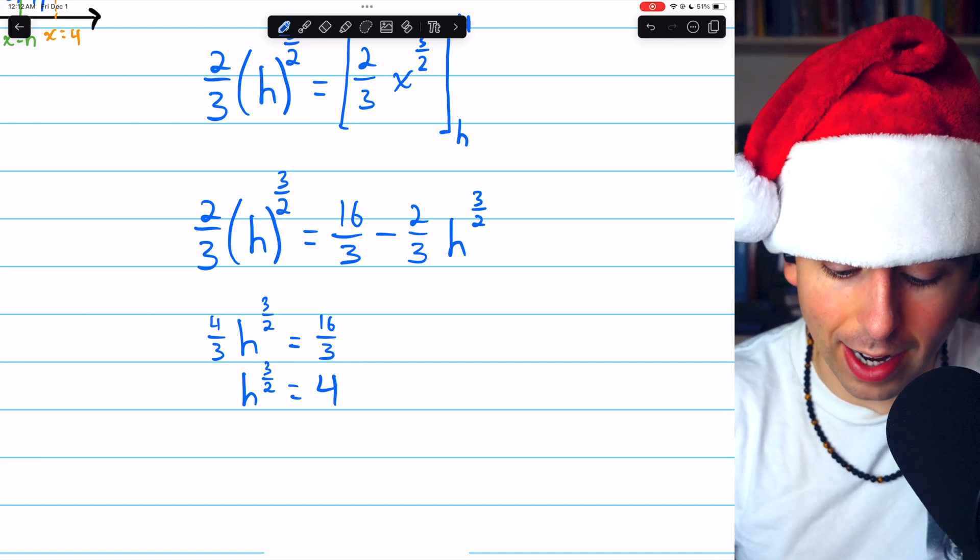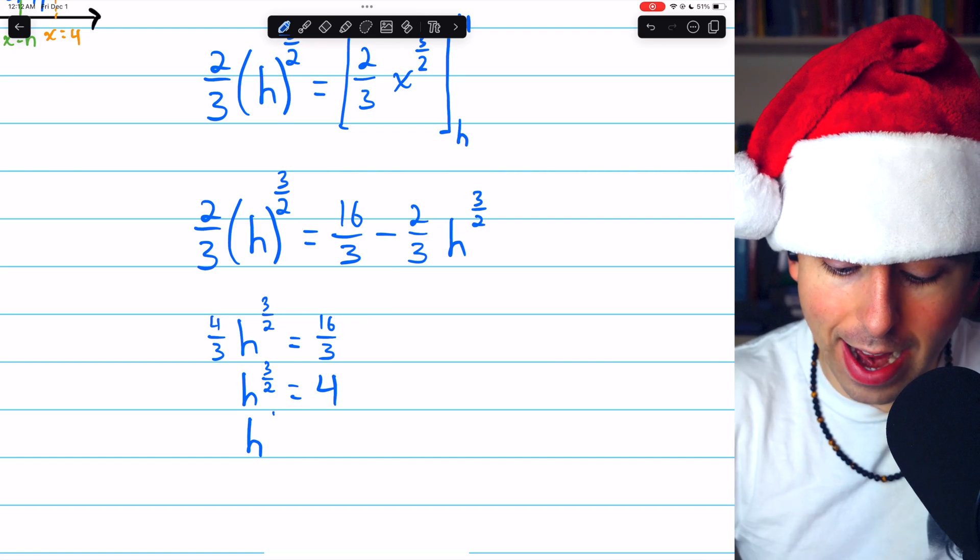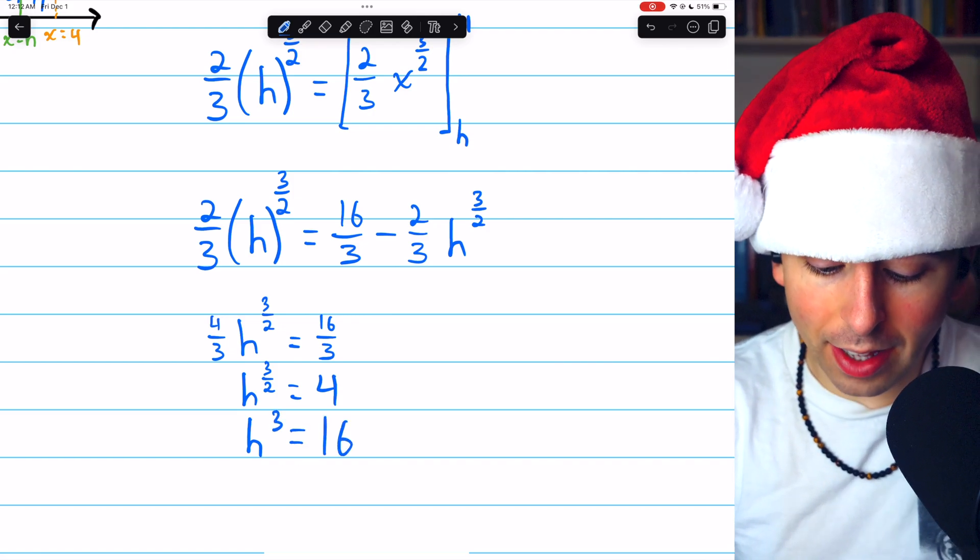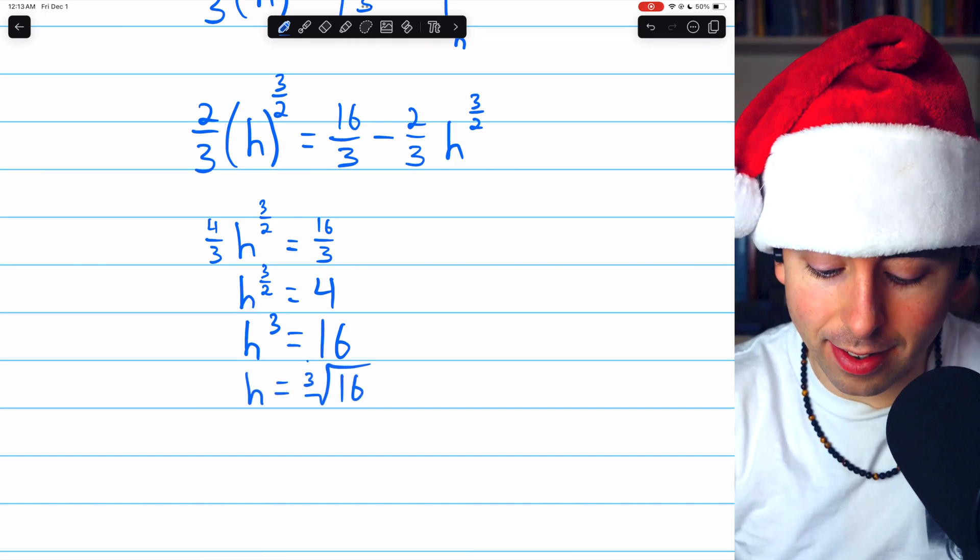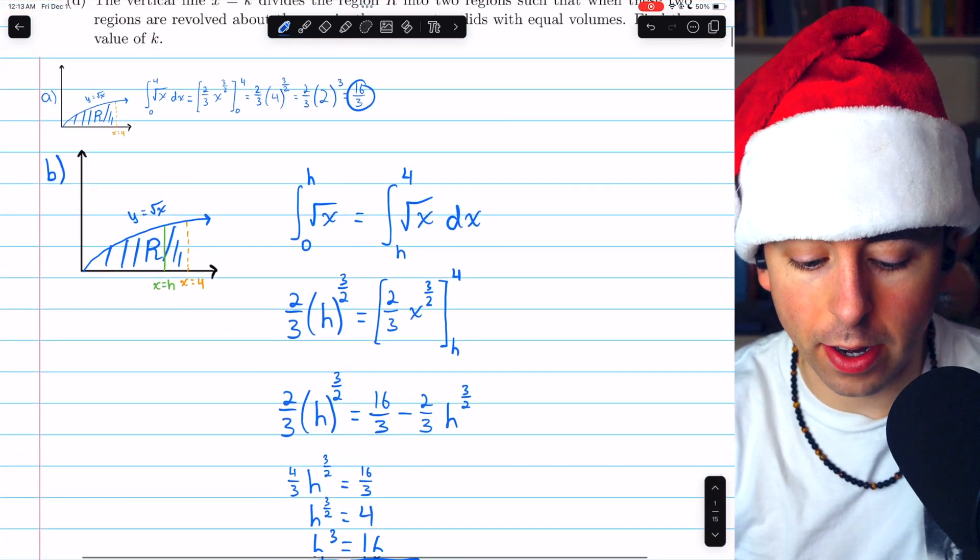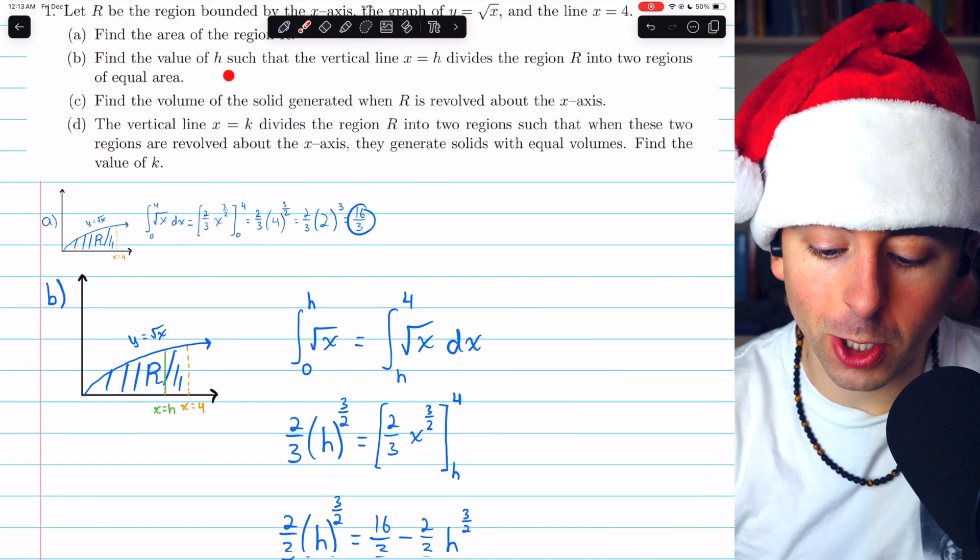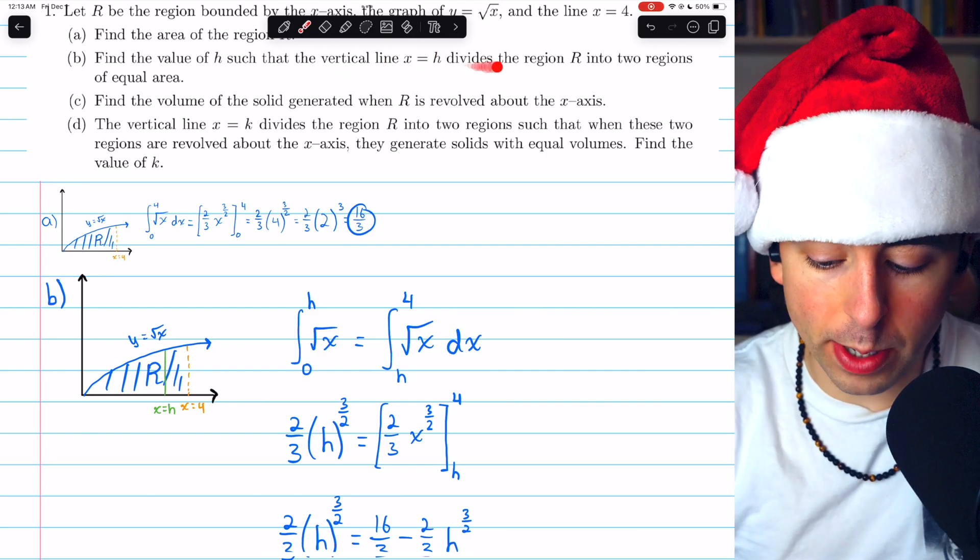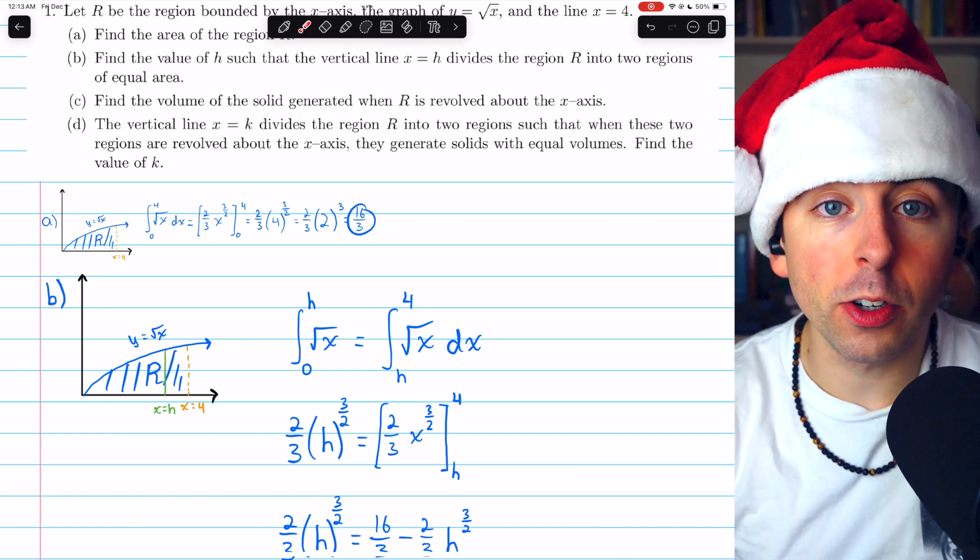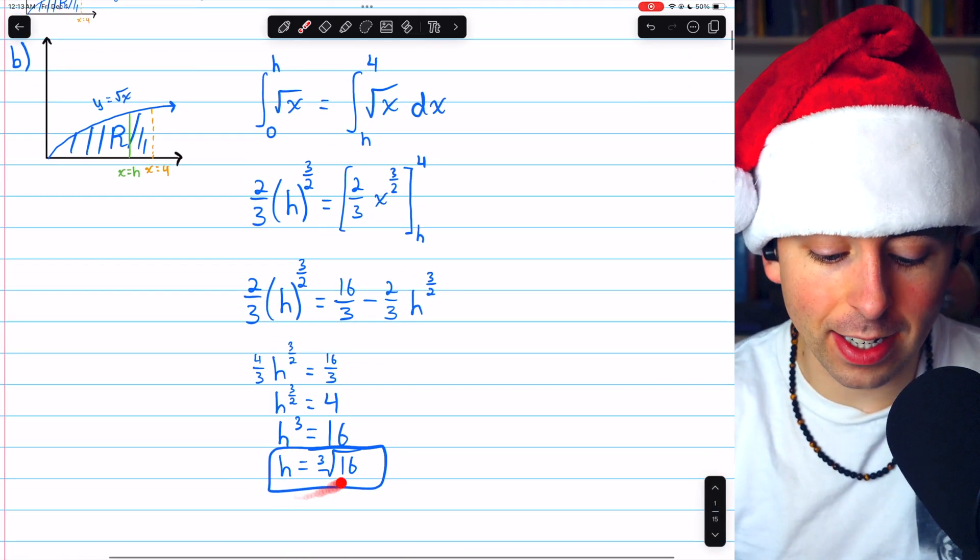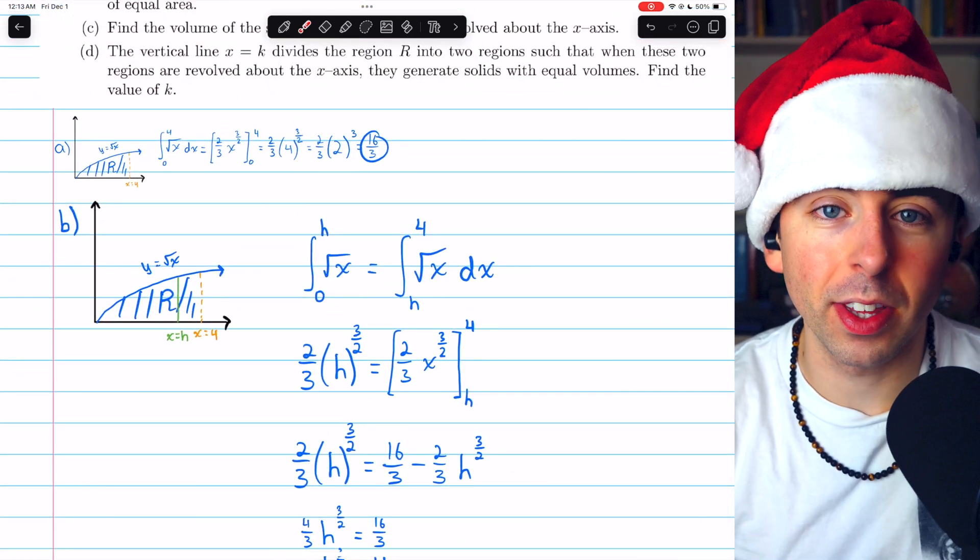Now we can square both sides to get rid of that power of 1 half. Thus, we'll have H cubed equals 16 and then take the cube root of both sides. And that is the answer to our question. Remember, the question here was to find the value of H such that the vertical line X equals H divides the region R into two regions of equal area. So if we were to draw the line X equals cube root of 16, that would split the region into two regions of equal area.